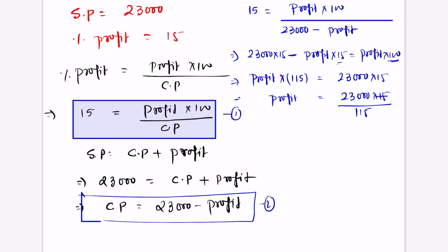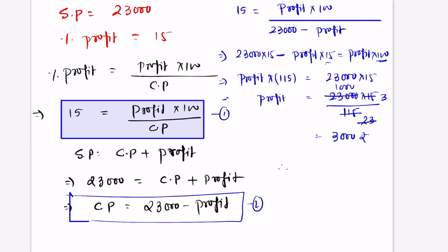To solve: first cancel by 5, giving 23,000 times 3 divided by 23. Cancelling further gives 3,000. So the profit value is 3,000. And cost price equals selling price minus profit: 23,000 minus 3,000 equals 20,000.